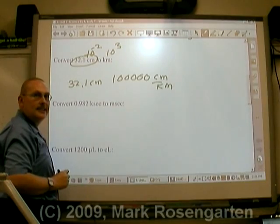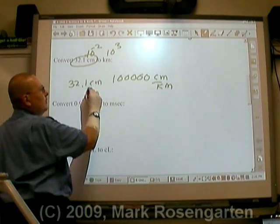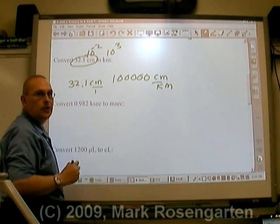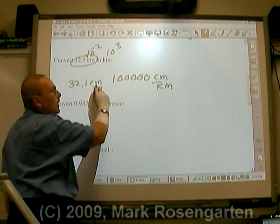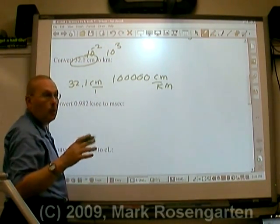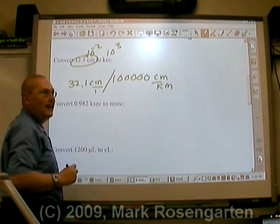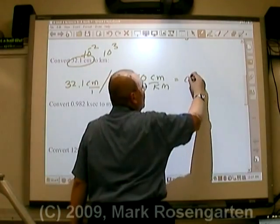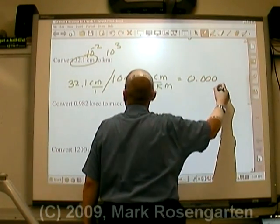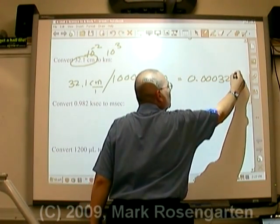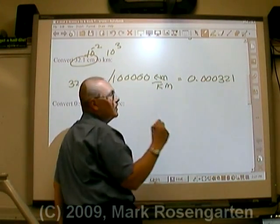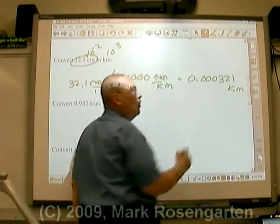Now, how do we cancel out centimeters? Notice that centimeters is in the numerator, and centimeters is in the numerator over here, too. If we multiply, we'll get centimeters squared, so that won't work. The only thing we can do is divide. And that gives us 0.000321. And because centimeters have canceled, it leaves us with kilometers.